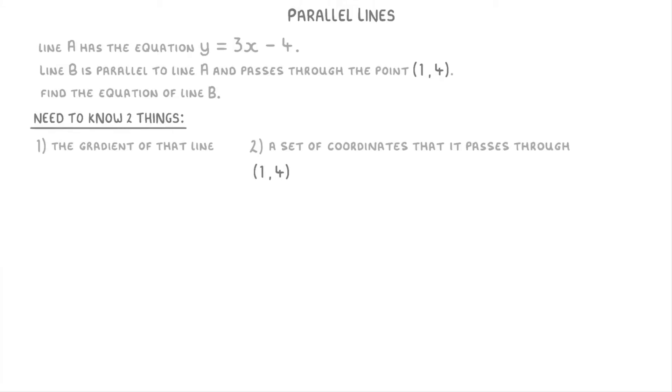They don't tell us the gradient directly, but they do tell us that line B is parallel to line A, which means that both lines have the same gradient. So if we can find the gradient of line A, that will also be the gradient of line B.